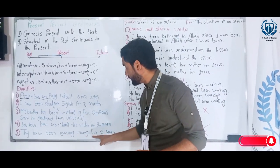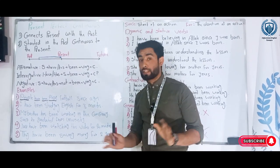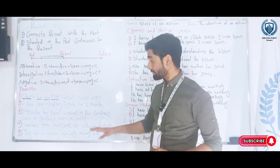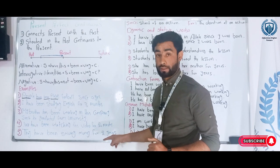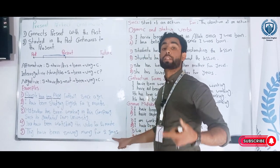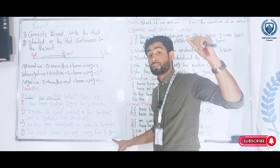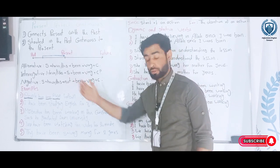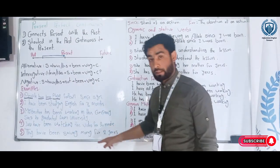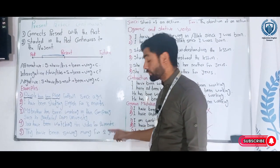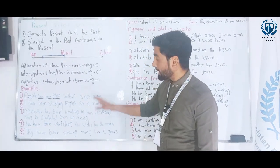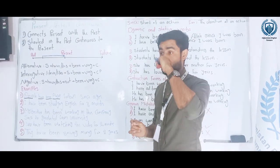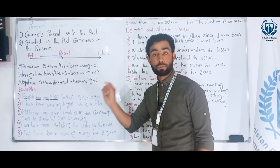The fifth example: 'They have been saving money for two years.' They started saving two years ago, they are still saving, and they may continue saving in the future. All of these actions started in the past, come to the present, and may or may not go to the future — that is why we call them present perfect continuous tense.